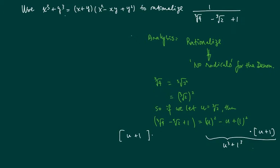Cubic root of 4 is really cubic of 2 squared, and this square can really be applied outside, so if we let u equal to cube of 2, then this left-hand equation is equal to u squared minus u plus 1.